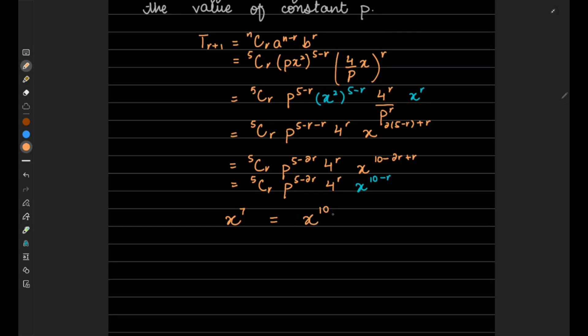For that, what will be the power of r? That is what we need to find. So as we have the same basis, we can equate the power: 7 equals 10 minus r, and r will be equals to 10 minus 7, that is 3. So for r equals to 3, we should be finding...